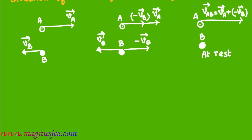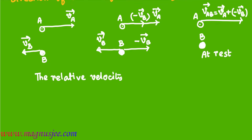That means the relative velocity of body A with respect to B can be obtained by imposing an equal and opposite velocity of B on both A and B, so that B is brought to rest and the resultant of the two velocities gives the relative velocity of object A with respect to object B.